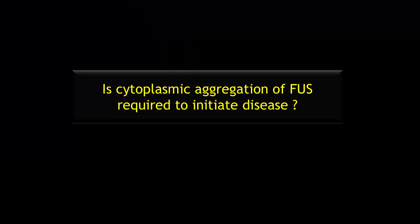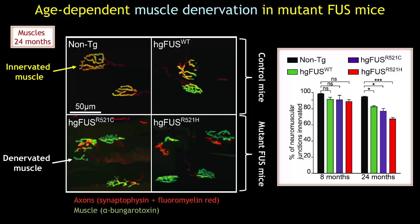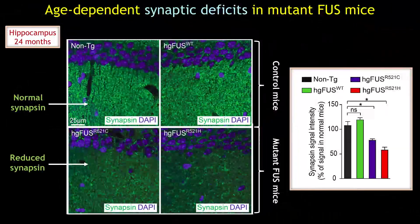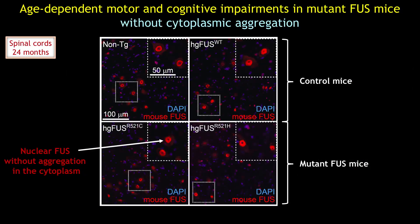A hallmark of ALS patients with FUS mutations is cytoplasmic aggregation of FUS. However, it was not clear if and how aggregation contributes to disease, so this was the first question we asked. The humanized FUS mice developed age-dependent motor deficits including muscle denervation, recapitulating key hallmarks of ALS. These animals also developed features of FTD, a comorbidity commonly found in ALS patients, together with hippocampal synaptic loss. However, despite disease initiation and progression in our mutant FUS mice, we did not observe evidence of cytoplasmic aggregation or mislocalization of the FUS protein.